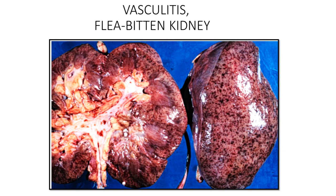Renal vasculitis is very common, with around nine or ten recognized syndromes. It affects both the outer surface and cut section of the kidney, involving cortex and medulla with no sparing. The result is parenchymal damage that may end in end-stage renal failure. The gross appearance is described as a flea-bitten kidney.